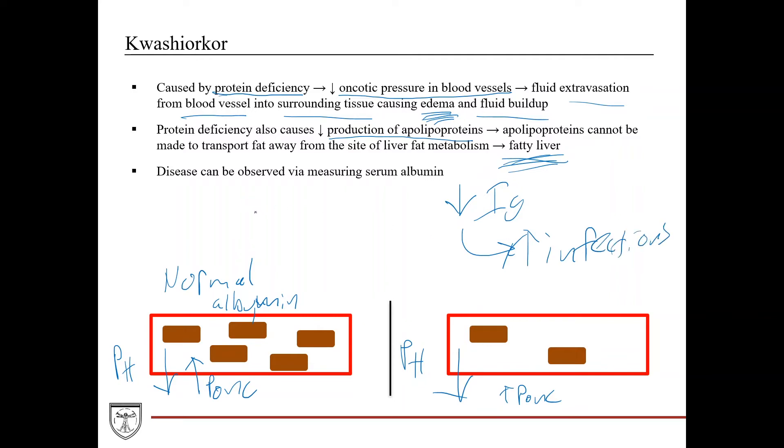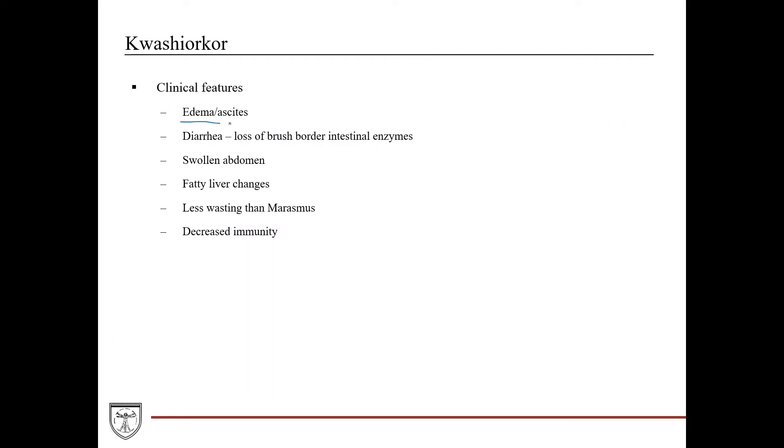You can diagnose or observe this disease by measuring serum albumin - they'll have significantly decreased levels. Clinical features include edema and ascites due to decreased protein; diarrhea due to loss of brush border intestinal enzymes; swollen abdomen due to significant edema and ascites; fatty liver changes due to decreased apolipoproteins. You'll see less wasting than in marasmus, and decreased immunity due to decreased immunoglobulin production.